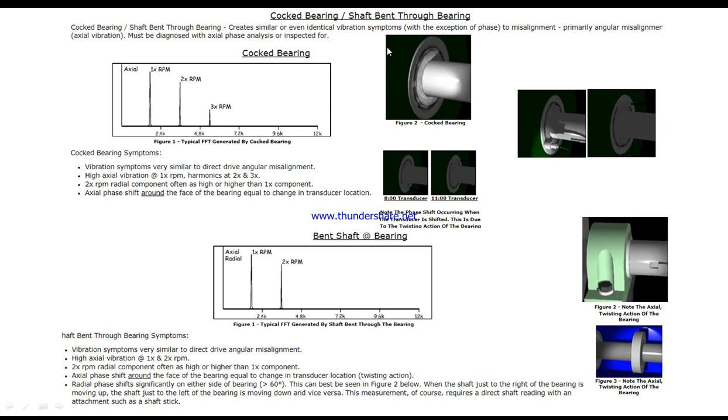Cock bearing creates similar or even identical vibration symptoms to misalignment, with the exception of phase. You have to go back to the misalignment videos available in the playlist. Primary angular misalignment axial vibration must be diagnosed with axial phase analysis. Here we can see a cock bearing where we note the face shift using face triggering to detect when the transducer is shifted.